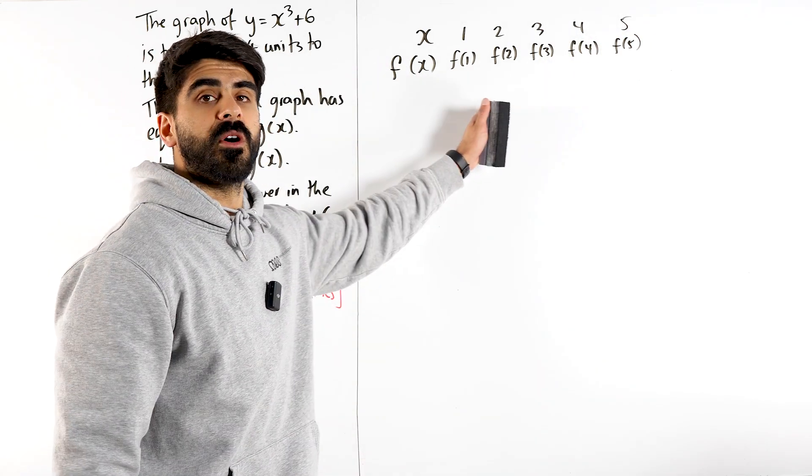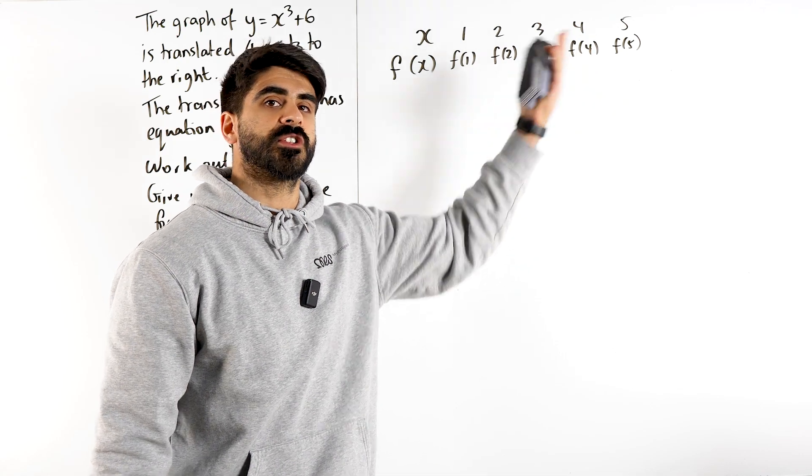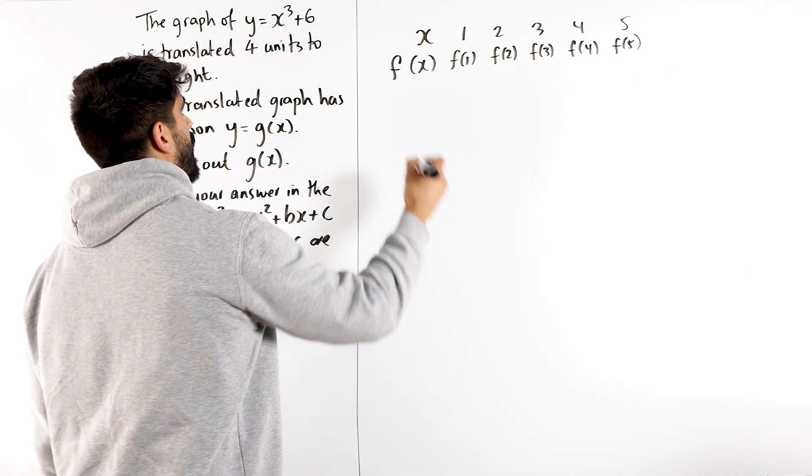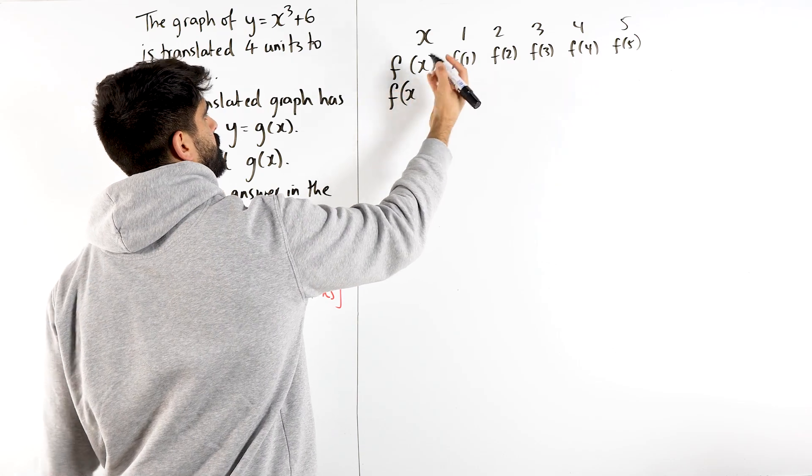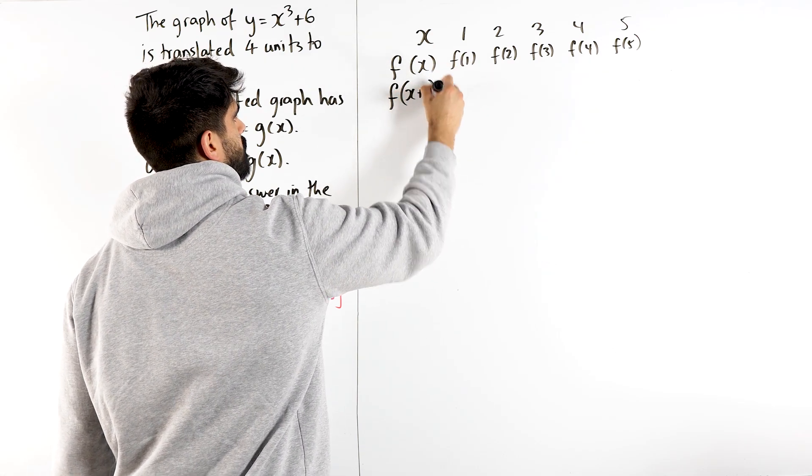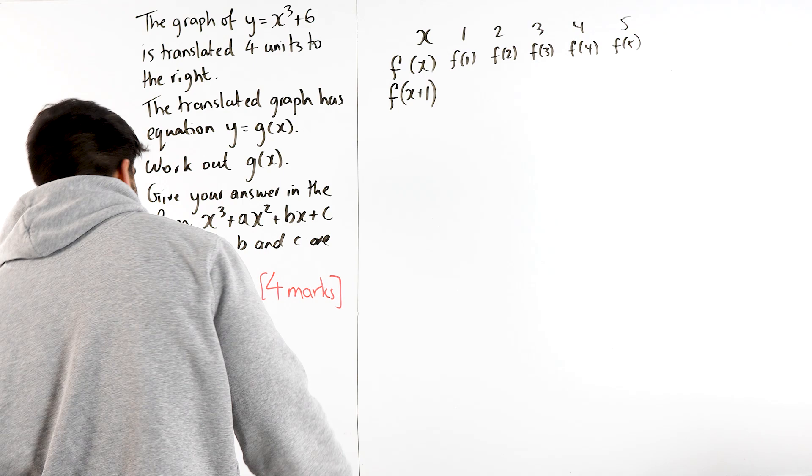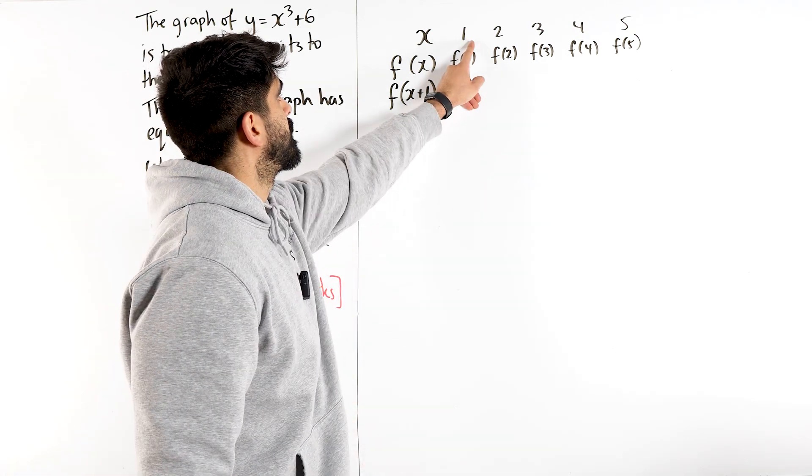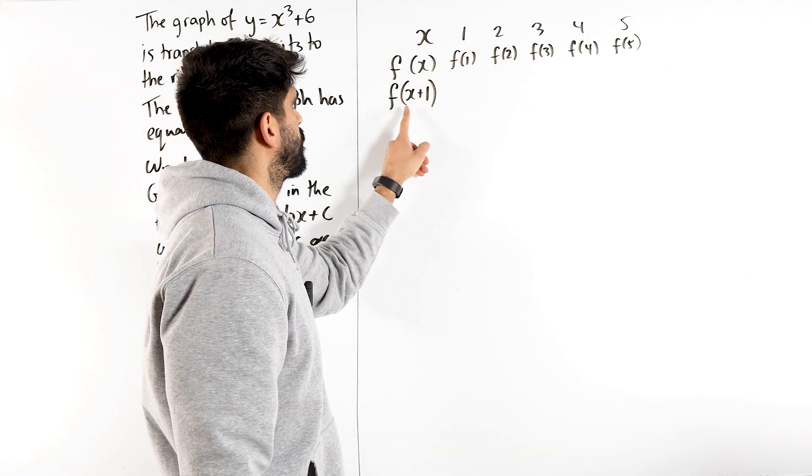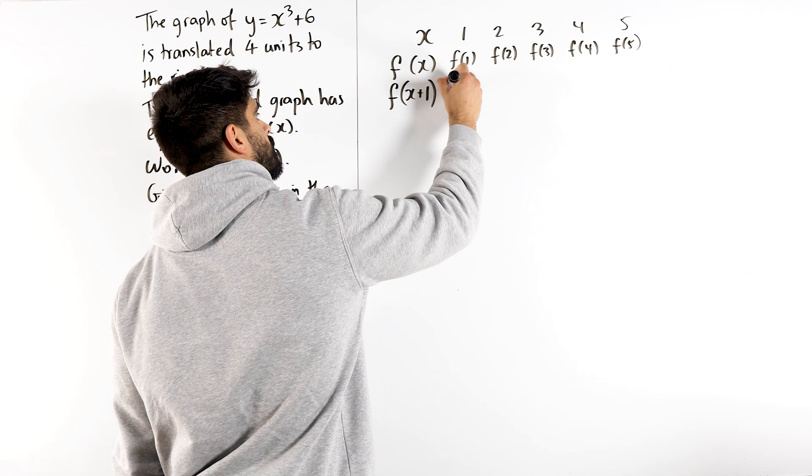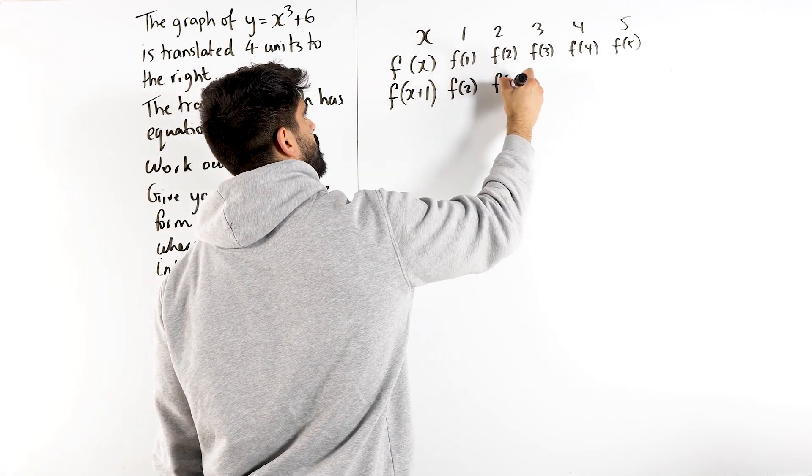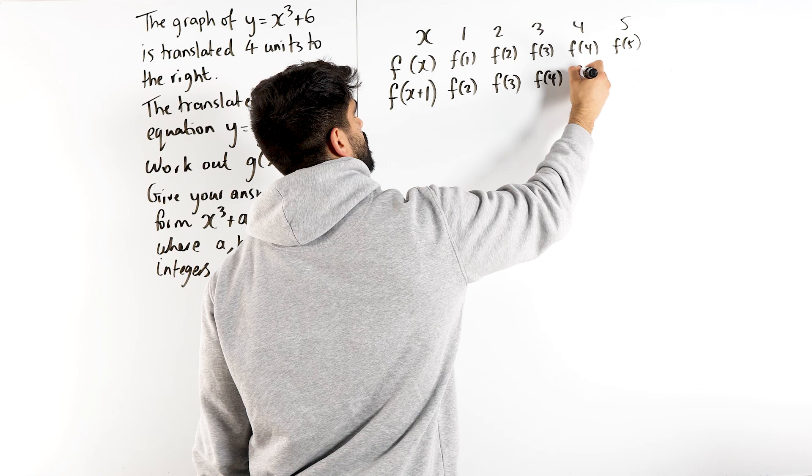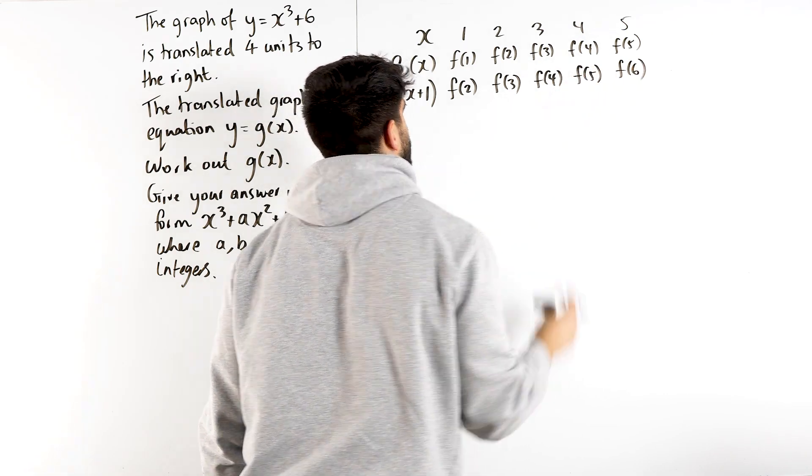So we don't know what the functions are, but if we did, we're just subbing those x values. What happens when we have f of x plus 1? If I sub in x is 1 into here, I'll get f of 1 plus 1, which is f of 2. f of 2. When I sub in 2 here, I get f of 3, f of 4, f of 5, f of 6.